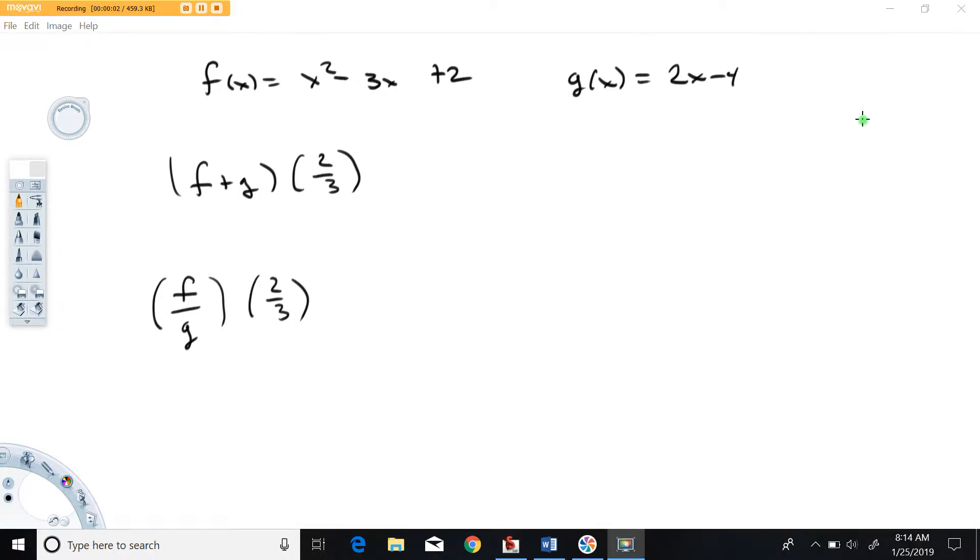Hi folks and welcome back to Math with Captain Rod. I'm making this video to provide some examples of the algebra of functions. So what we're going to do here is given these two functions, f of x equals x squared minus 3x plus 2 and g of x equals 2x minus 4.